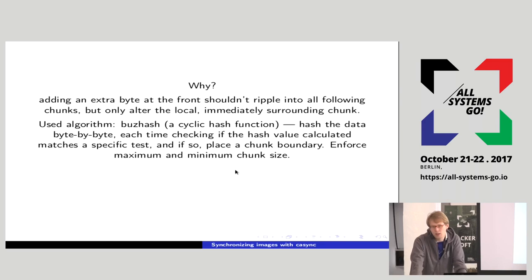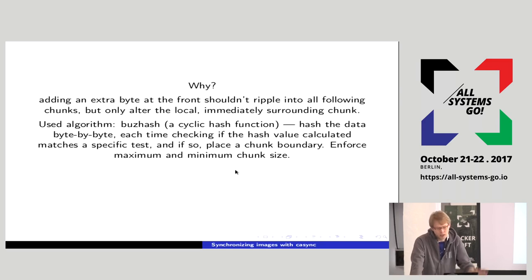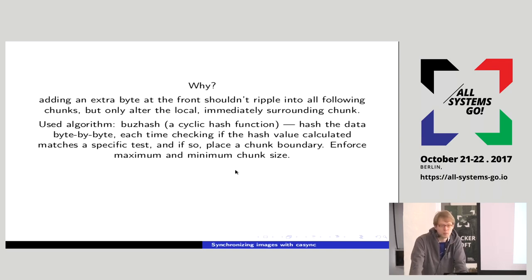In rsync, this only becomes visible if you have two file system trees where two files — one in the source and one in the destination tree — carry the exact same name, because only then does rsync start doing its rsync algorithm. If the file system trees have the same files but with different names, rsync is not able to optimize anything there.